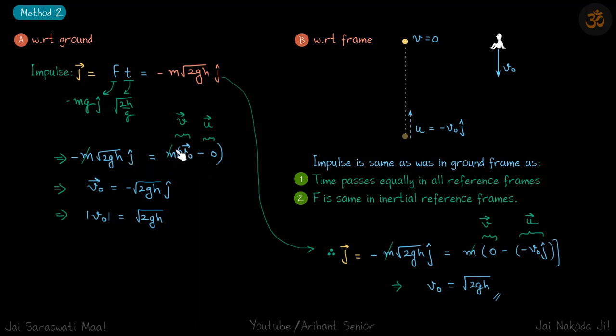So m into final velocity minus initial velocity. It has started from rest so initial velocity is 0 and this is final velocity. We just equate that to this and we get v₀ vector is -√2gh ĵ cap, or magnitude of v₀ comes to be √2gh.